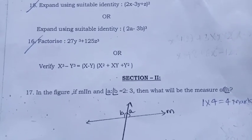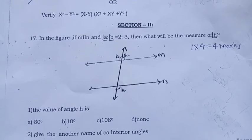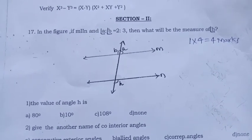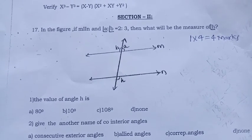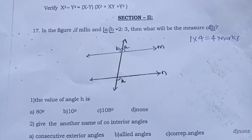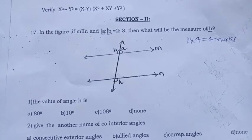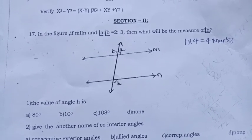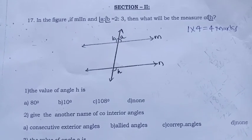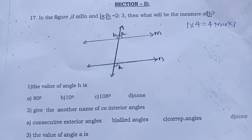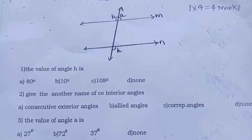Section 2. Here, they have given one case study and four questions. Each question carries one mark. In the figure, M parallel N and angle A to angle B is 2 to 3. Then, what will be the measure of angle H? The value of angle H is 80 degree, 10 degree, 108 degree, none.